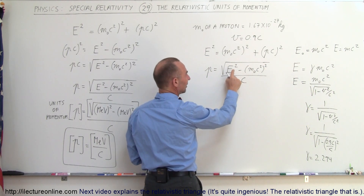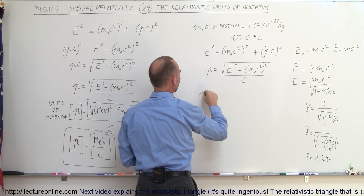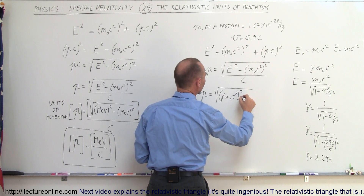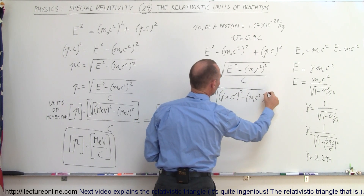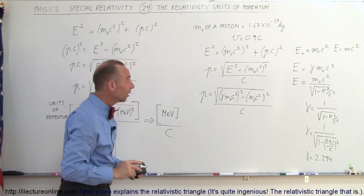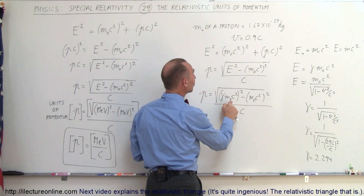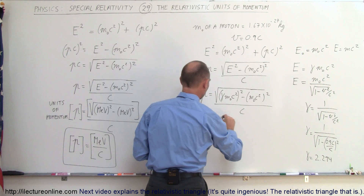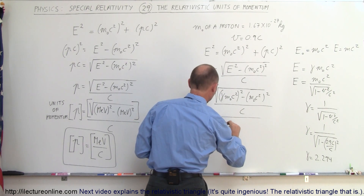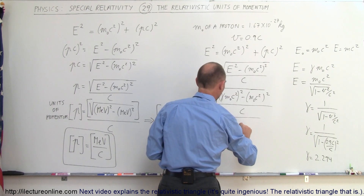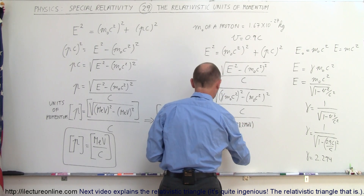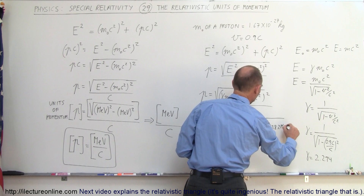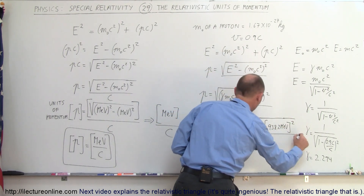Instead of E squared, we're going to write in terms of gamma. The momentum of this proton is equal to the square root of gamma times M-sub-naught times C squared, quantity squared, minus M-sub-naught C squared, quantity squared, and the whole thing divided by C. From the previous video, the rest mass energy of a proton — which has this much mass — was 938.2 million electron volts. So the momentum equals the square root of 2.294 times 938.2 MeV, squared, minus 938.2 MeV squared, all divided by C.